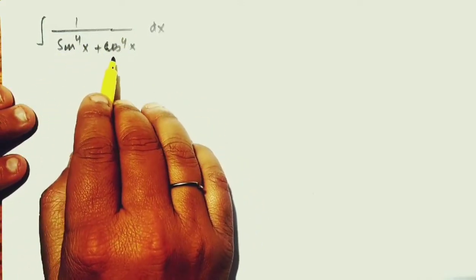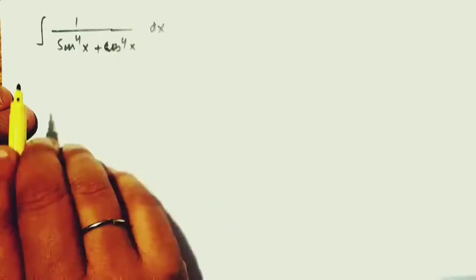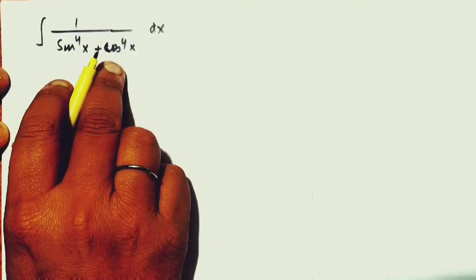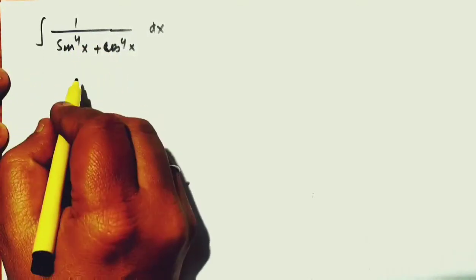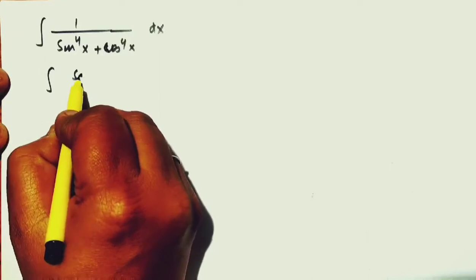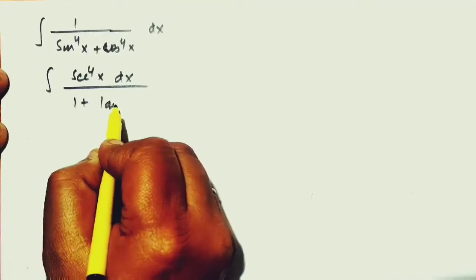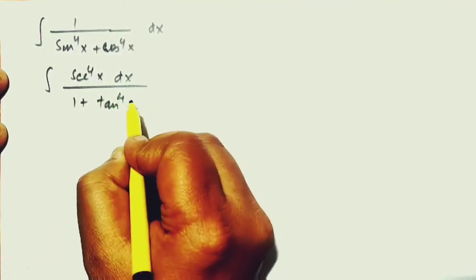So, I will divide by cos to the power 4x in the numerator and denominator. Dividing by cos to the power 4x numerator and denominator, then it will become integral of sec to the power 4x dx divided by 1 plus tan to the power 4x.